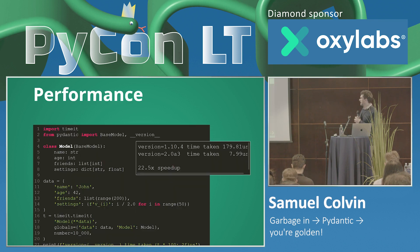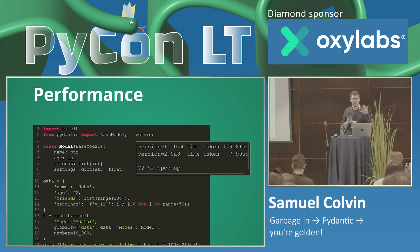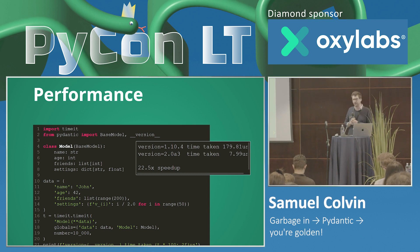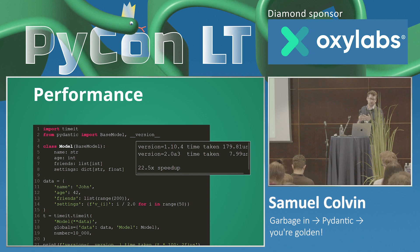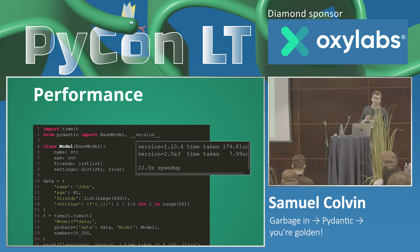I'm now going to give some examples of where the Rust implementation of Pydantic V2 helps Pydantic help you do cool things. Performance is not the most important thing for lots of people, but I think it is important. And it's interesting to see how this Rust implementation improves performance. Remember, we're often still starting with Python code and ending with Python code — so it's not a pure Rust application, and we're not in a numerical context like NumPy.